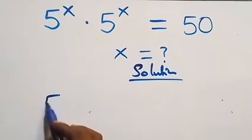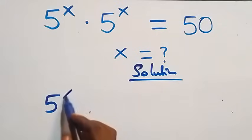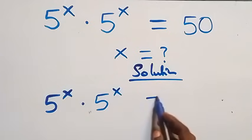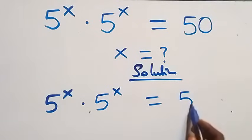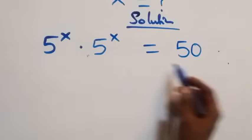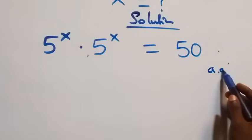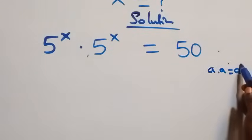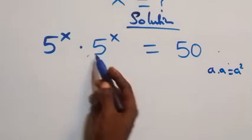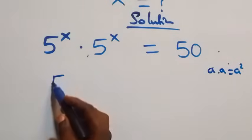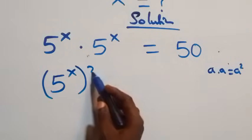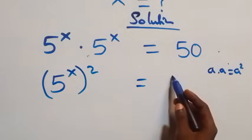We have 5 raised to power x times 5 raised to power x equals 50. Here, a times a can be written as a squared, so we can write this as 5 raised to power x, all squared, equals 50.